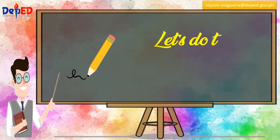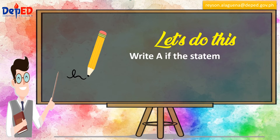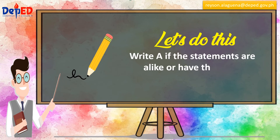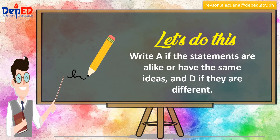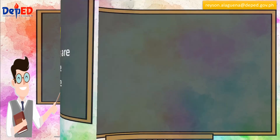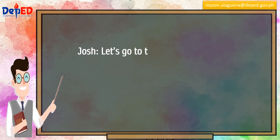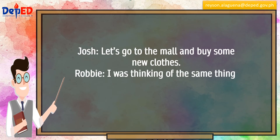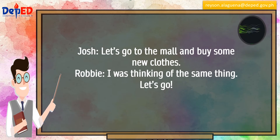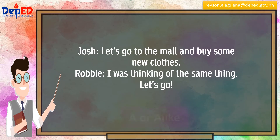Let's do this. Write A if the statements are alike or have the same ideas and D if they are different. Josh: Let's go to the mall and buy some new clothes. Robbie: I was thinking of the same thing. Let's go. The answer is A, or alike.